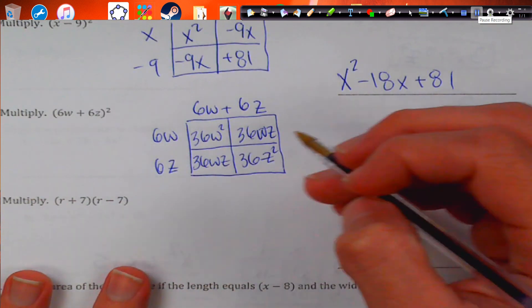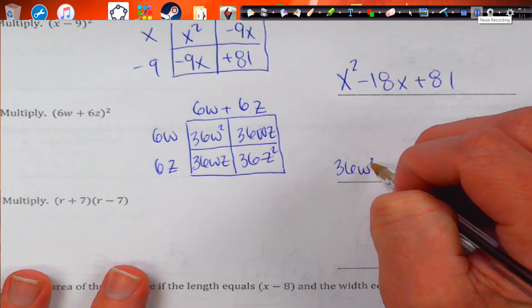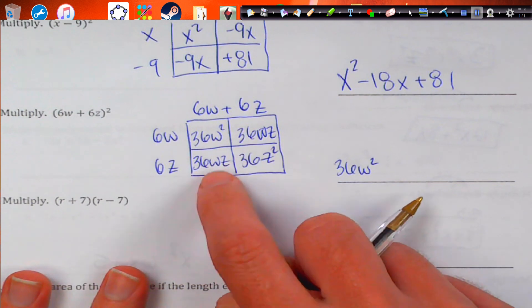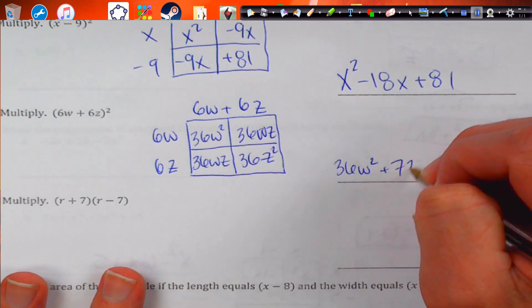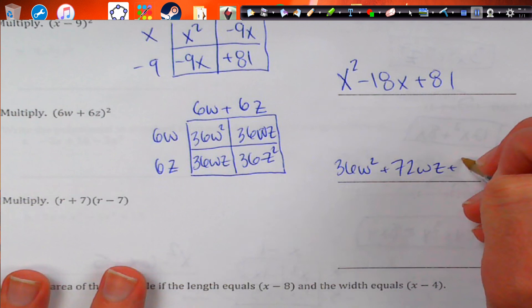Then we've got to combine like terms. So, we get 36w squared. These actually have the same terms, wz, wz. So, we can add those two together to get 72wz. And then 36z squared.